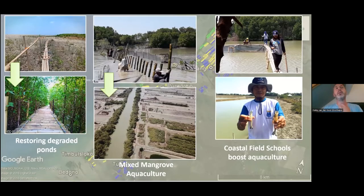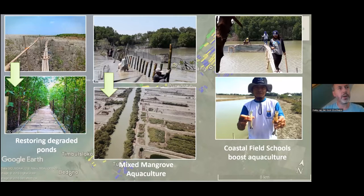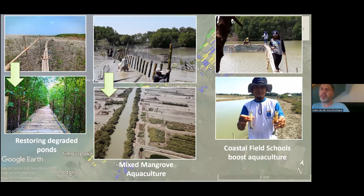Here are a few pictures of the measures we took. On the left side, we integrate mangroves into abandoned ponds along the coast to stabilize the muddy environment and muddy coast, as well as building boardwalks along the mangroves so people could enjoy and fish within them. The central picture shows the transition of traditional aquaculture practices into integration of mangroves in the system. On the right-hand side, you see how coastal field schools boosted their economy and productivity.